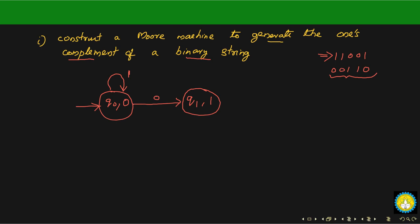From q1, if you see a one you have to output zero. Again from q1, if you see a zero you have to output one. So you convert all zeros to ones and all ones to zeros.